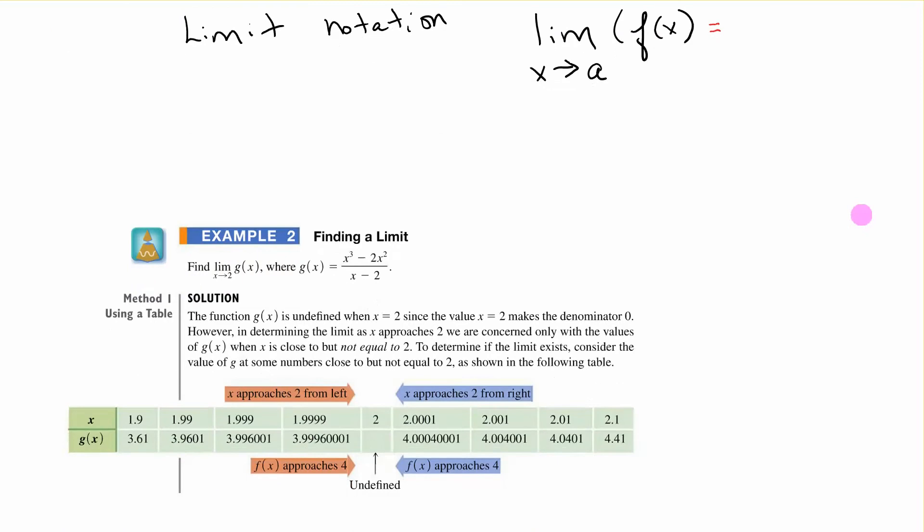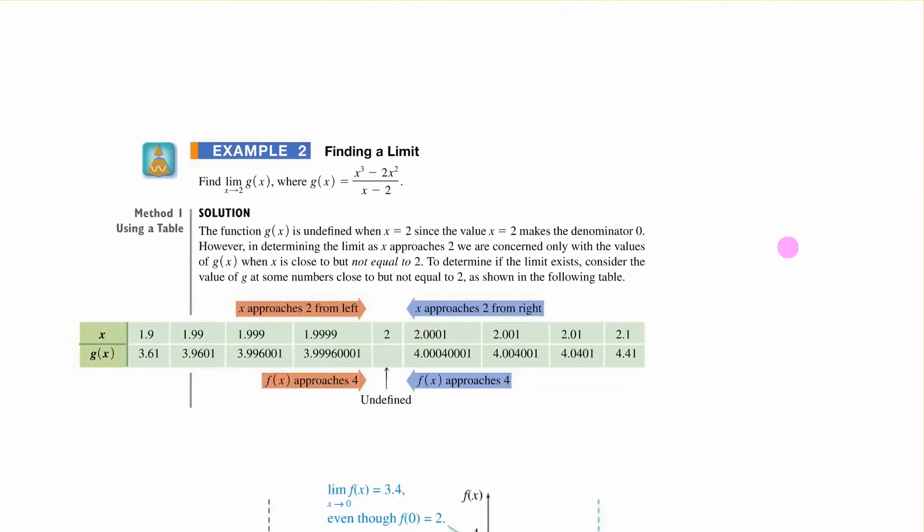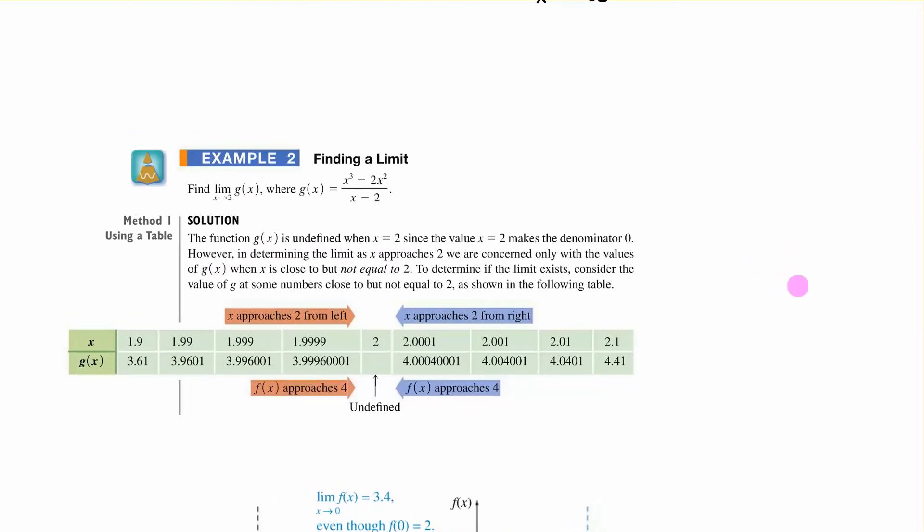So let's talk about what a limit means and how we could look at that and kind of discover it. This says find the limit as x approaches 2 of g of x where g of x is equal to this function. Well what we'll learn is that sometimes you can direct substitute in a limit. If we let x be 2 what happens here on the bottom it would go to zero. So that's a problem but let's see what we can figure out.